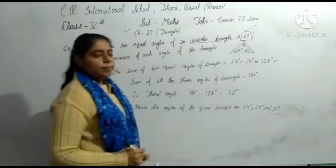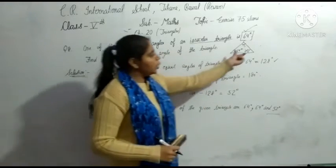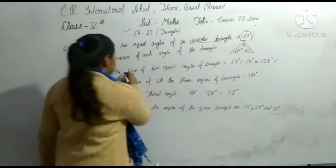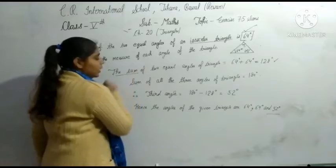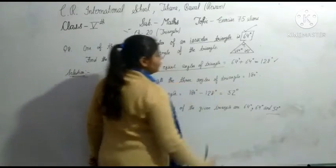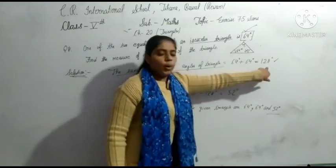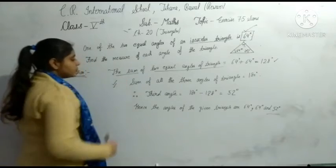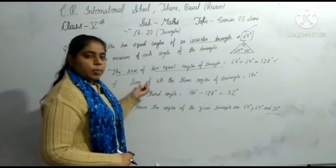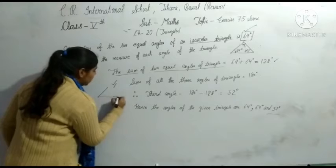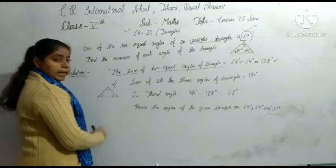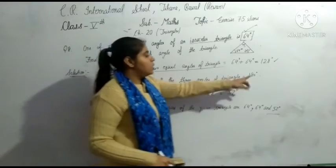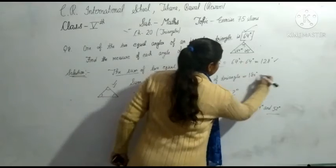We find out the third angle. If we have two angles then we will sum first. Sum of two equal angles of triangles. We know the triangle property that is three angles sum to 180 degrees, sum of all the three angles of triangle. This is clear?